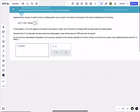So we're wondering, in the first 12 minutes after the plane enters the holding pattern, when will the plane be 180 miles from the airport? And that's going to be d(t).